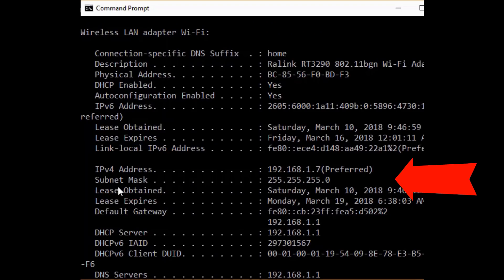And you can find your computer's subnet mask, IP address, and many other pieces of information. Here is my computer's subnet mask 255.255.255.0 and IP address.